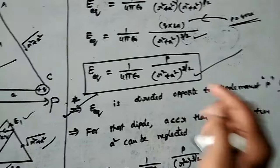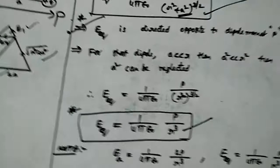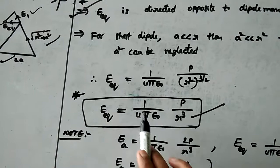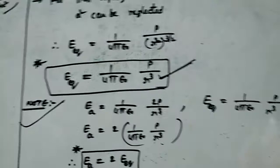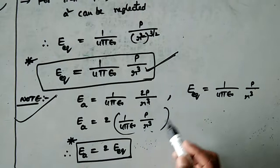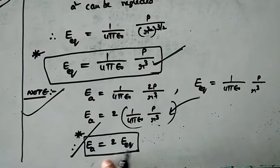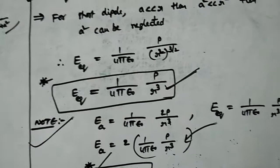For a short dipole, the length is very small, so a squared is much less than r squared and can be neglected. The formula simplifies to r squared to the power 3 by 2, and the 2 cancels, leaving r cubed. So the equatorial electric field for a short dipole is 1 by 4pi epsilon naught times p by r cubed. The axial electric field is 2p by r cubed, and the equatorial is p by r cubed. Therefore, the axial electric field is two times the equatorial electric field — axial field is double that of the equatorial field.